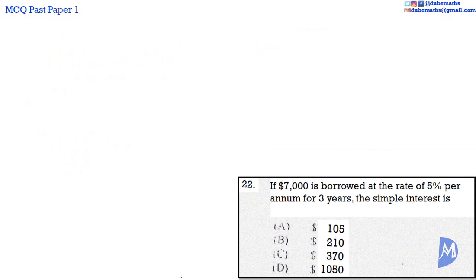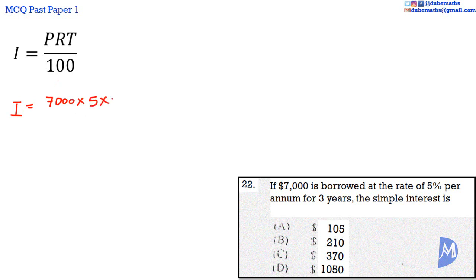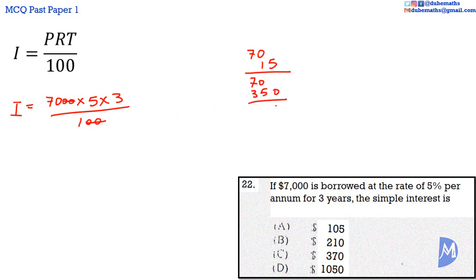Question 22. Simple interest I is equal to principal multiplied by rate multiplied by time, all over 100. Therefore I is equal to 7000 multiplied by 5% multiplied by 3 years, all over 100. Canceling: 5 multiplied by 3 is 15, so you multiply 70 by 15. 70 by 15 equals 1050. The answer is D.